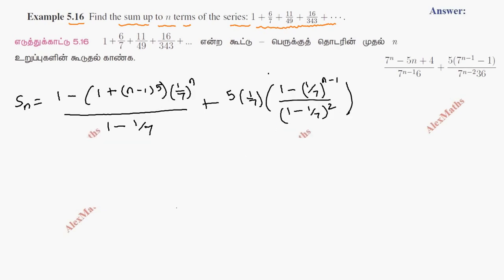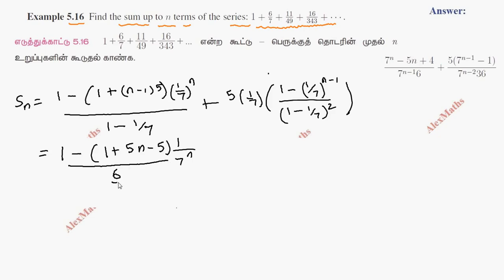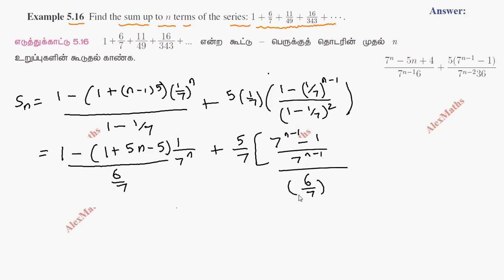After further simplification, the (1 by 7)^n terms appear in the numerator. We get [1 minus (5n minus 4) times (1 by 7)^n] divided by (6 by 7), plus 5 by 7 times [7^(n-1) minus (1 by 7)^(n-1)] divided by (6 by 7) squared.